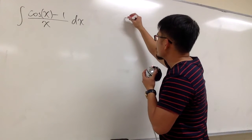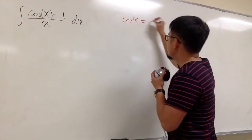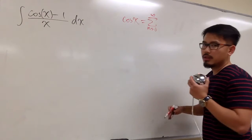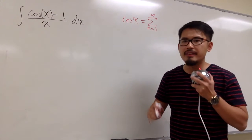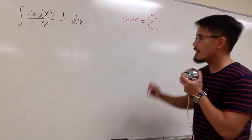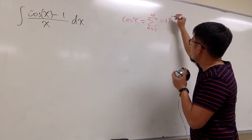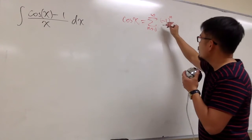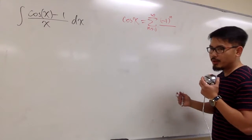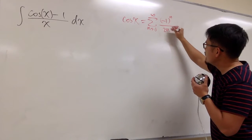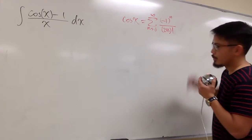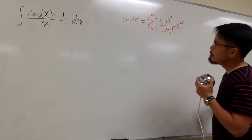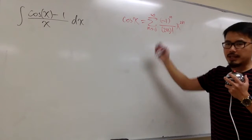I will write it down right here. Cosine x is the same as sigma of n goes from 0 to infinity. For sine and cosine, they are both alternating, and they both have the factor negative 1 to the nth power. For cosine, this is an even function, so we divide it by the even factorial — namely 2n factorial — and we also have the even powers, x to the 2n power. This is cosine x.